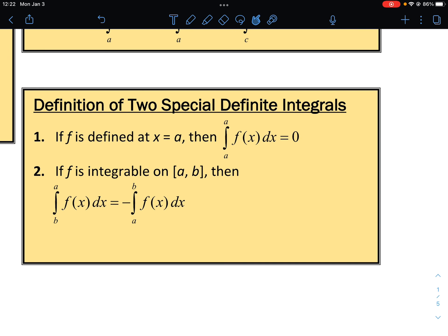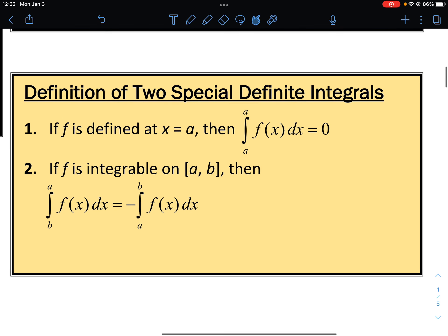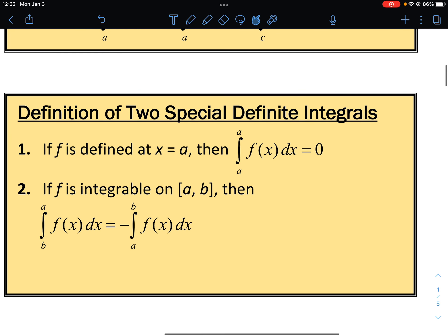And then finally, two special integrals that we need to remember. The first one, if F is defined at x equals A, the integral from A to A is 0. Why is that? Well, think of this. Remember, this is length times width. We're just doing a lot of rectangles here. And if the integral goes from A to A, that means the width is 0. So if you multiply it by 0, it'll be 0.